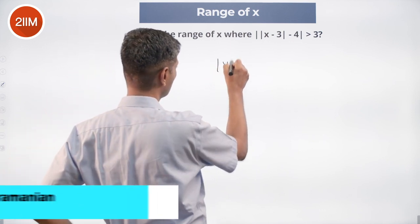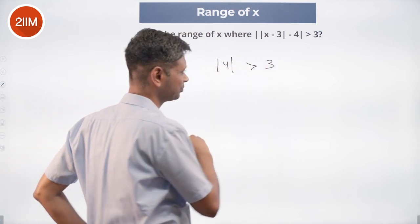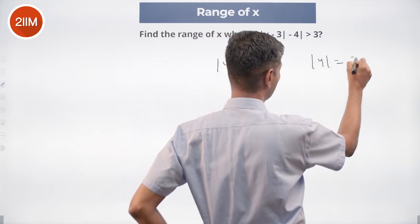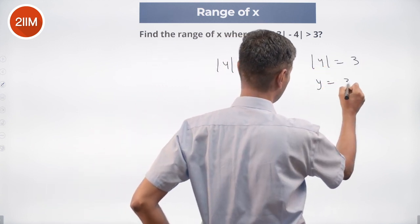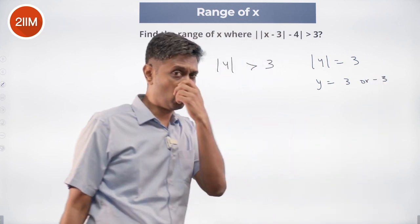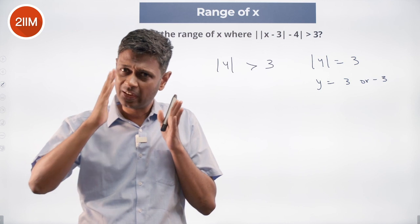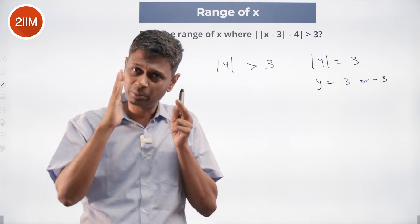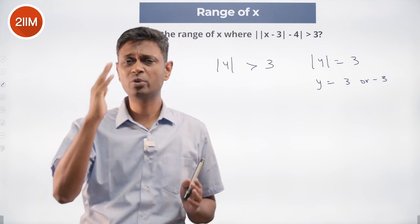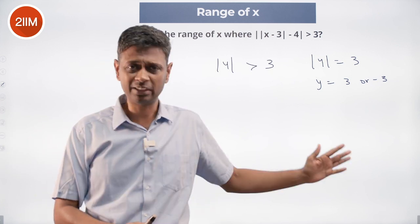Suppose we are told modulus of y is greater than 3. If modulus of y equals 3, then y should be 3 or minus 3. If modulus of y is greater than 3, that means the magnitude of y is greater than 3 — either y should be greater than 3 or y should be less than minus 3.